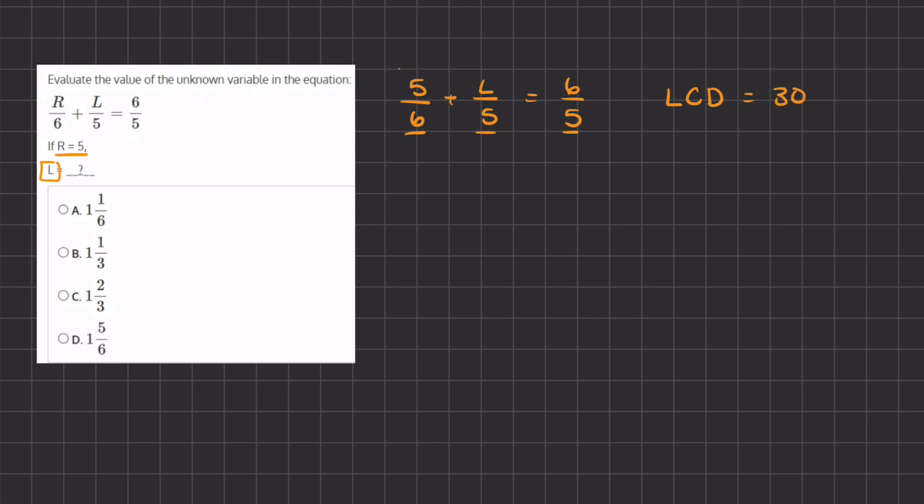So we are going to multiply this entire expression by 30. So we have 5 times 30 divided by 6, plus l times 30 divided by 5, equals 6 times 30 divided by 5.